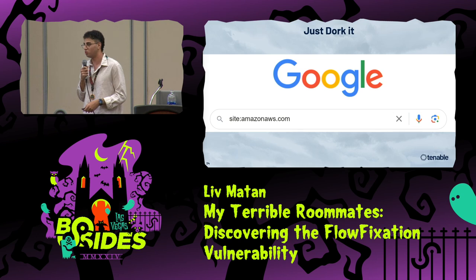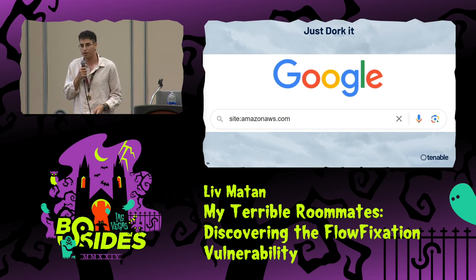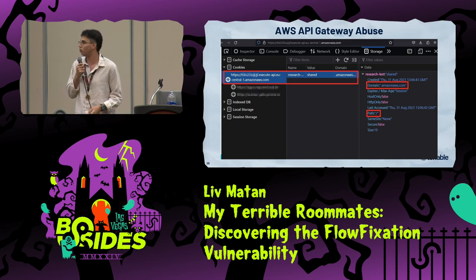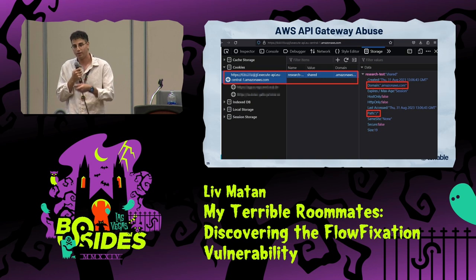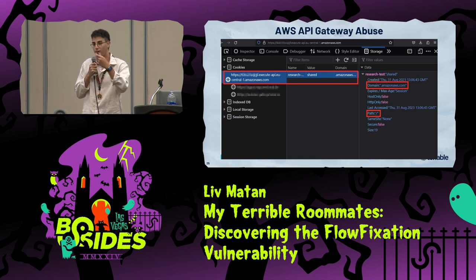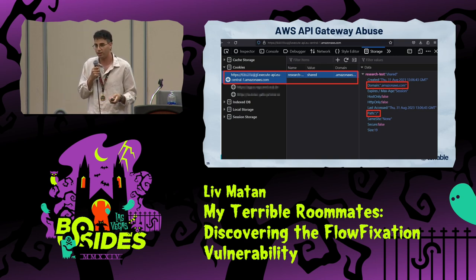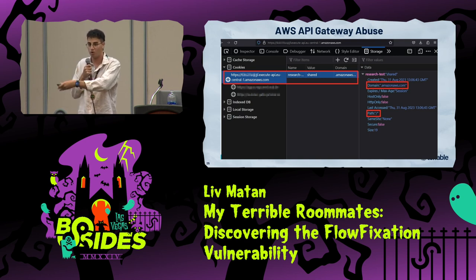The next step was to use Google Dorking to find services hosted under the same amazonaws.com domain that might allow me to set a cookie from that service. I found AWS API Gateway which, at that time, was not present in the public suffix list and allowed me to set a cookie to the amazonaws.com shared parent domain. I can now lure victims into my gateway, host exploit code there, set a cookie to the victim's MWAA with a known session ID, redirect the victim, force them to log in to their own dashboard, verify the session — and then use it.